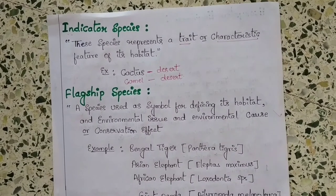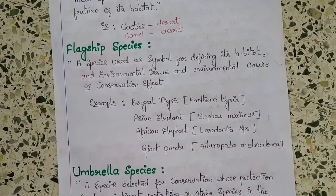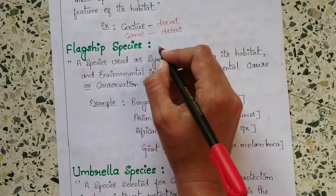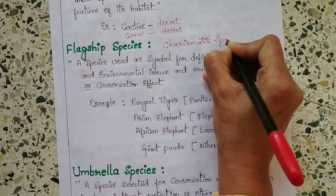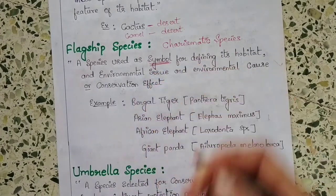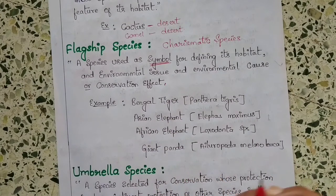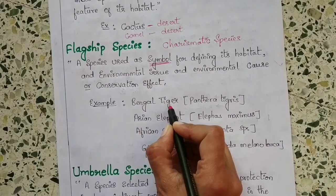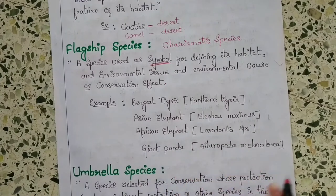Let us move on to the next term, which is flagship species. Another name for flagship species is charismatic species. These are species used as a symbol for defining a habitat, environmental issue, environmental causes, or conservation efforts. Examples include Bengal tiger, Asian elephant, African elephant, and giant pandas.